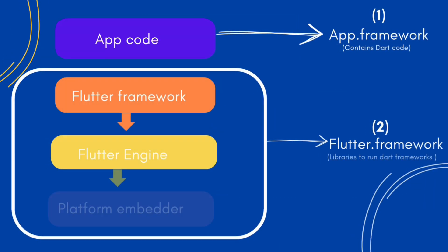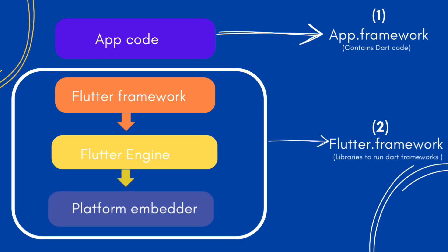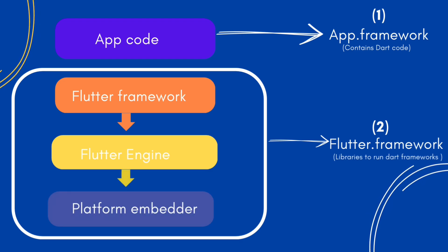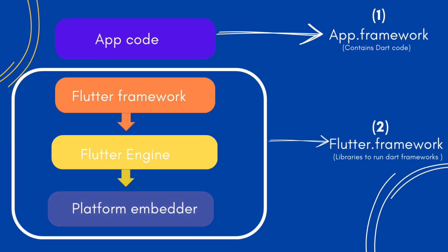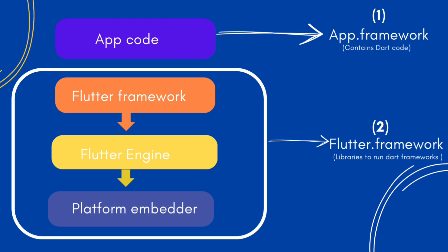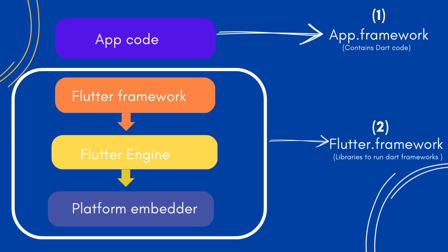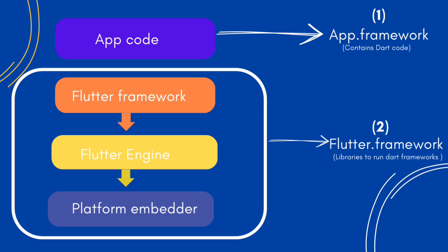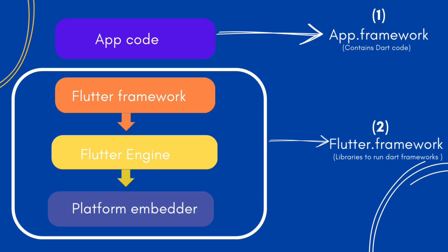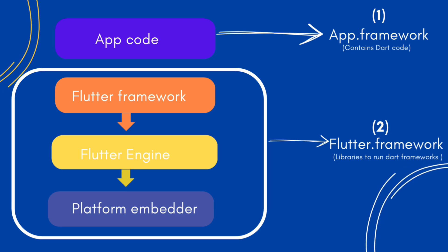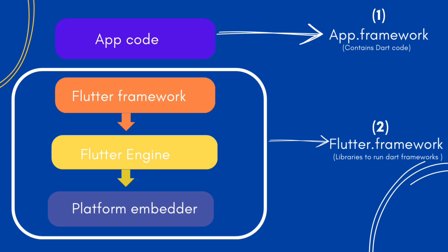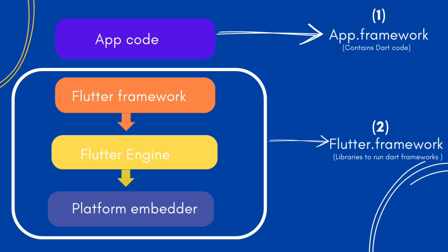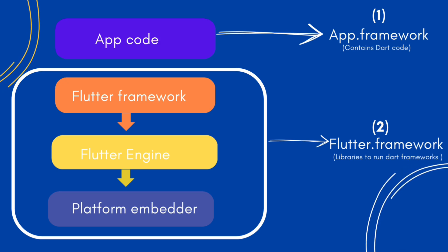Once compiled, Flutter generates two key iOS frameworks. App.framework contains your compiled Dart code. Flutter.framework includes the Flutter engine and all required libraries. These frameworks are then embedded into a native iOS project, which is compiled using Xcode. Essentially, your Flutter app is packaged as a native iOS app with an embedded Flutter engine.